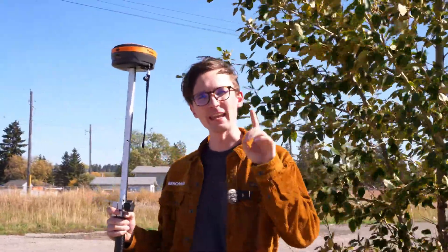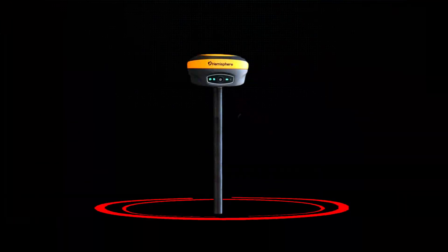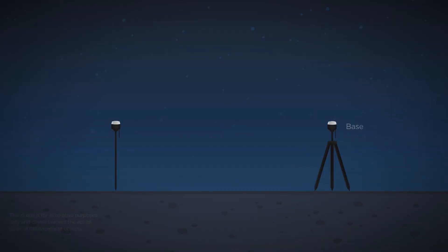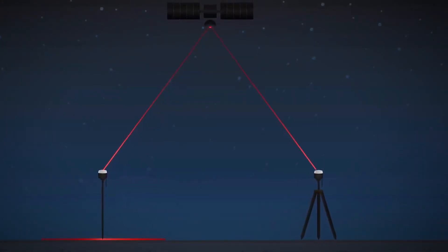With RTK, it gets more complicated because instead of just having one receiver calculating a position, we want to correct that half-meter position down to a centimeter. To do that, we use two receivers — a base receiver and a rover receiver. That can be in the form of a network base or a local UHF base station. In principle, we're broadcasting corrections from the base to the rover, and those corrections help us tighten up our position.